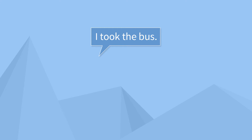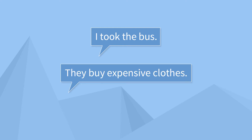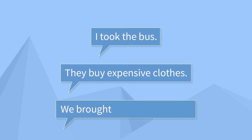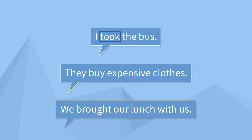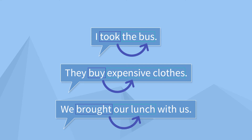Here are some more sentences with transitive verbs: 'I took the bus.' 'They buy expensive clothes.' 'We brought our lunch with us.' The objects of these sentences are 'the bus,' 'expensive clothes,' and 'our lunch.' What did I take? The bus. What did they buy? Expensive clothes. What did we bring? Our lunch.